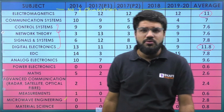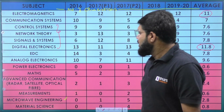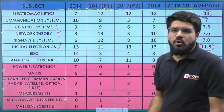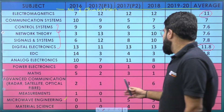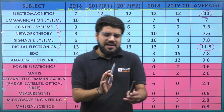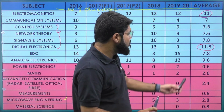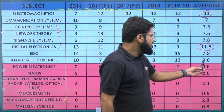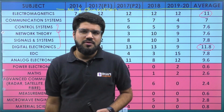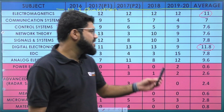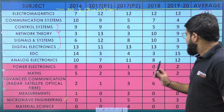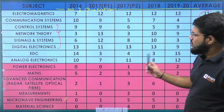Digital electronics is a very scoring area — 13, 11, 13, 3, 9 — averaging around 12 questions, probably the highest frequency subject alongside electromagnetics. Slightly more effort is needed for sequential circuits, but it's a high-frequency area. EDC and analog together contribute around 17 to 18 questions — approximately 8 from EDC and 10 from analog electronics.